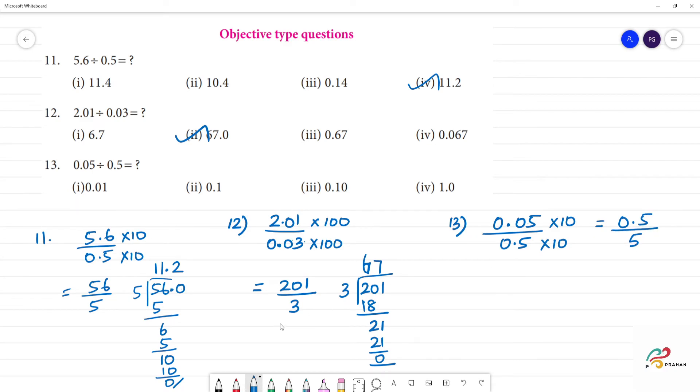Point moves. 0.5 divided by 5. 5 goes into 5 once, 5 minus 5 is 0. What do we get? 0.1. This is 0.1. Clear?